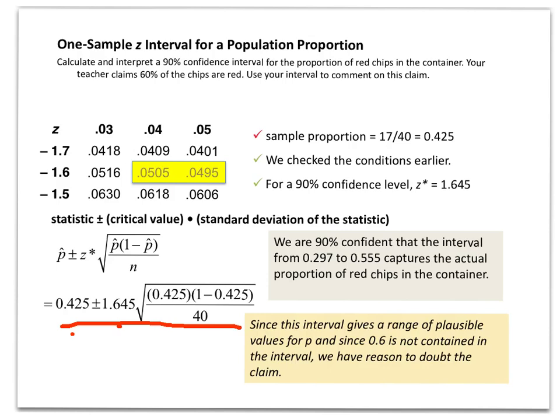This is our p hat plus or minus a critical value for our 90% confidence interval times the standard deviation of our statistic where we use 0.425 as a replacement for p. We find out that our confidence interval is between 0.297 and 0.555. So we would interpret this as saying we are 90% confident that the interval from our lower bound 0.297 to our upper bound 0.555 captures the actual proportion of white chips in the container.